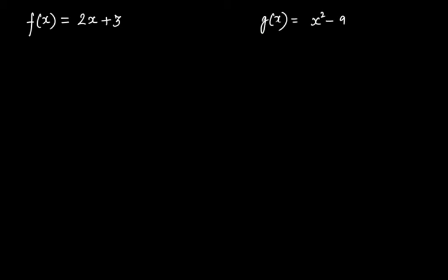Any given linear polynomial has one and only one zero or root. To understand this, we have taken two polynomials f(x) and g(x), where f(x) = 2x + 3 and g(x) = x² - 9. f(x) is a linear polynomial because the degree is 1, and g(x) is a quadratic polynomial because the degree is 2.